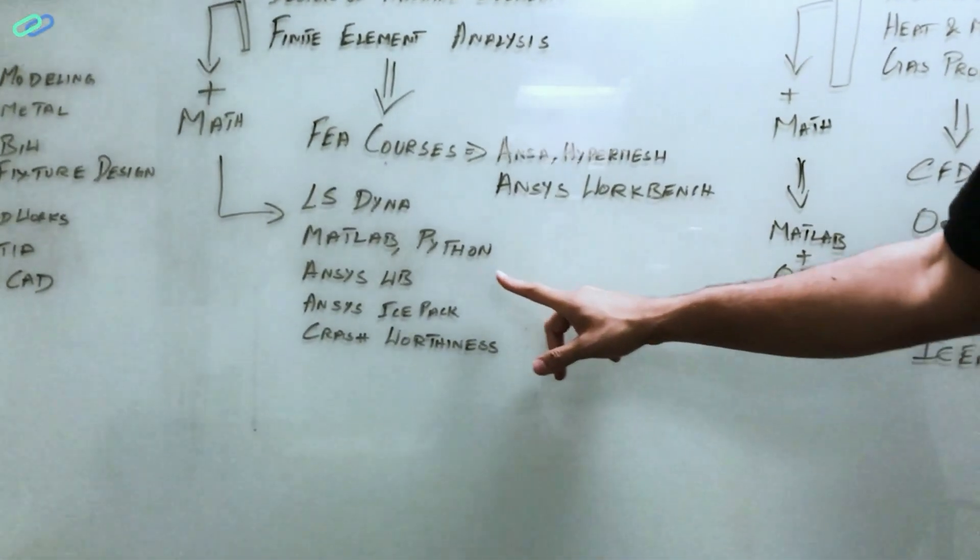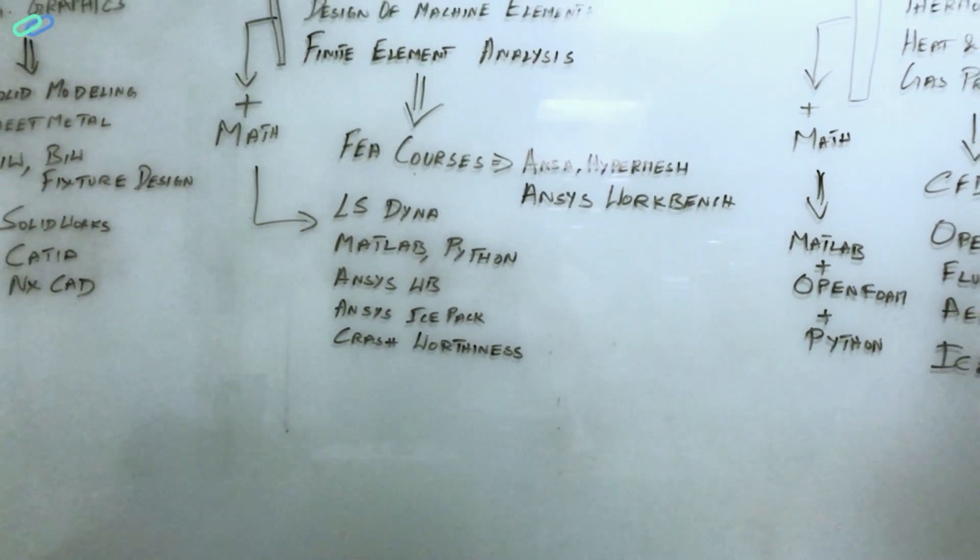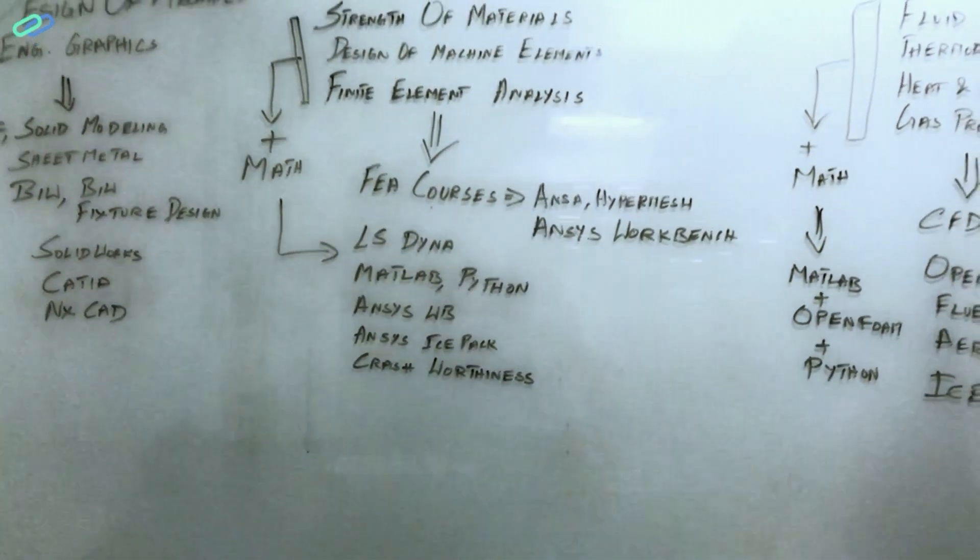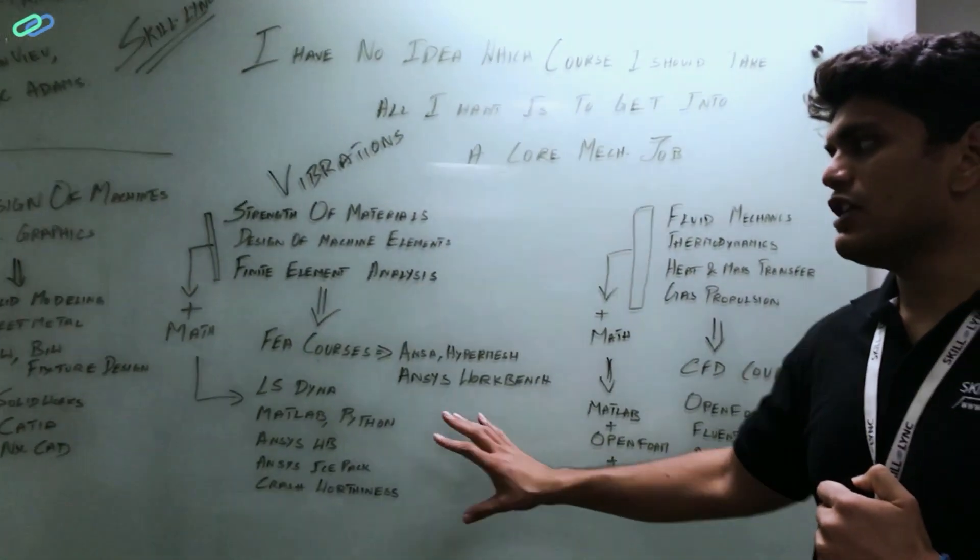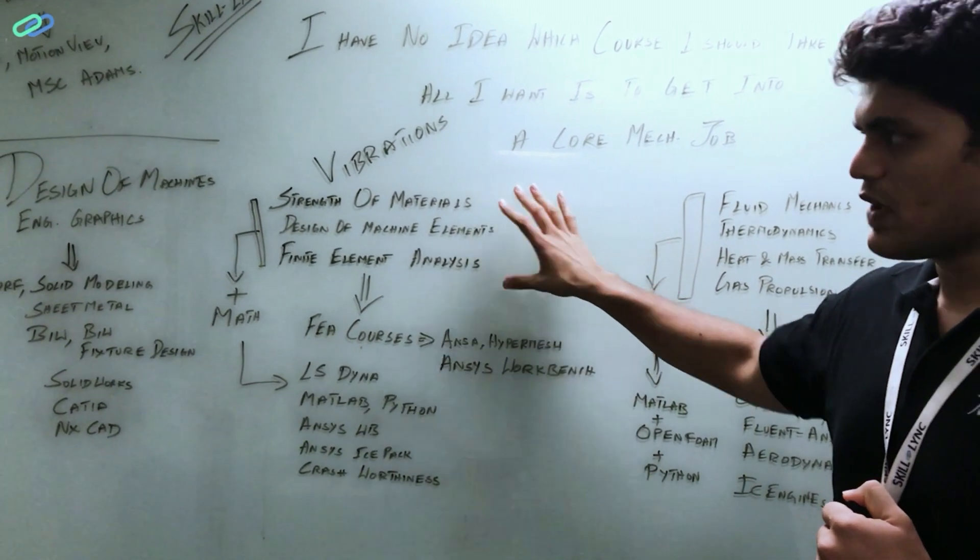But if you are good at math, and if you are good at these four topics, then you should take up FEA using LS-DYNA, you should be good at MATLAB and Python, again ANSYS Workbench, ANSYS iSPAC, crashworthiness analysis using Radioss and HyperMesh. These are some of the courses that you can take up in Skilllink if you are good at these three domains.